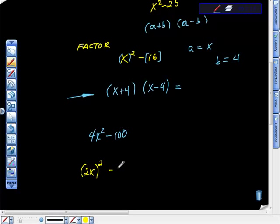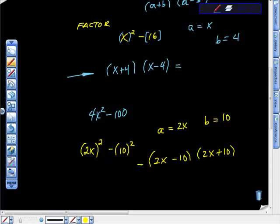So we have a equals 2x, b equals 10. Write that out. We have (2x minus 10) times (2x plus 10), don't we? And do this little bit of math and if you do this, you're going to get your pieces back.